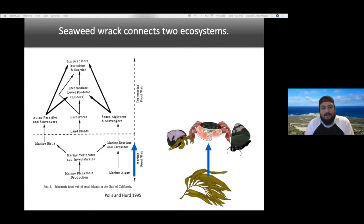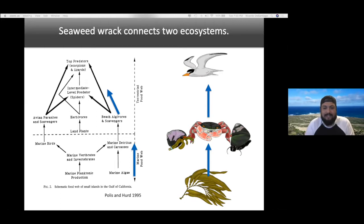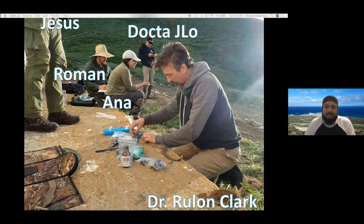In this food chain, seaweed that washes ashore is grazed on by herbivores and omnivores along the coast, which are then eaten by top-level predators. As Gary Polis et al.'s work shows, there are other pathways that make this food chain more complicated than the cartoon I drew. The story I'm going to tell you today is about a more complex food web that I learned about on a trip to the Coronado Islands that my advisor invited me on.